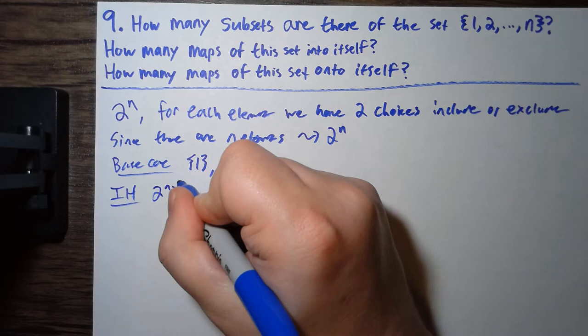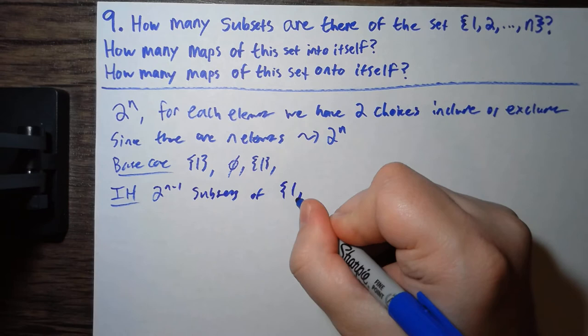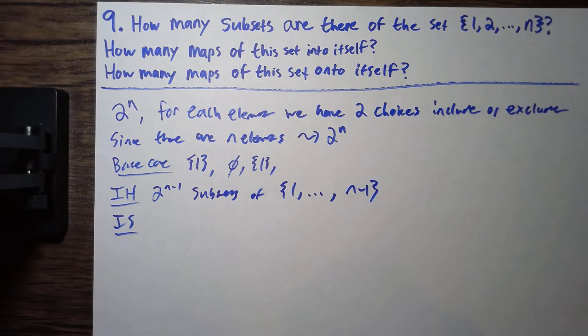That there are 2 to the n minus 1 subsets of the set 1 to n minus 1. And then the induction step would be something along the lines of,